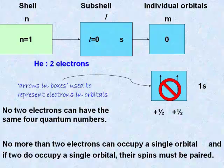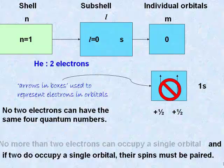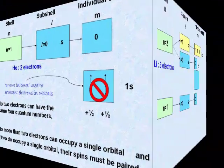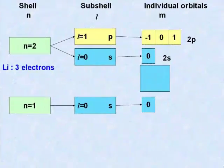Now, let us examine why is it that no more than two electrons can occupy an individual orbital. Take, for example, the lithium atom, which has three electrons.